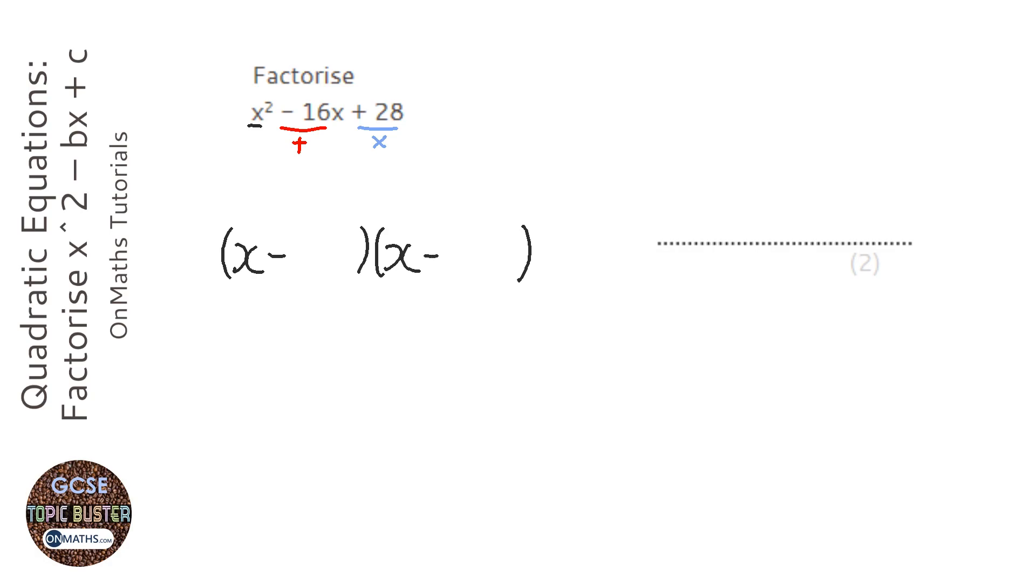Now we can take that out of our mind. We don't need to worry about the negatives. So we're looking for two numbers that multiply together to make 28 and add together to make 16. Remember, we're not thinking about the negatives for this anymore.